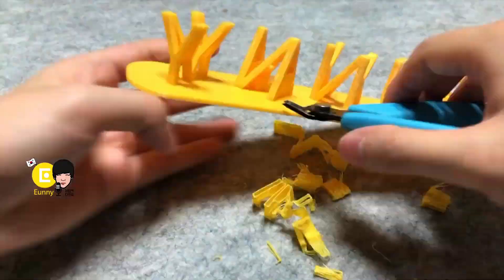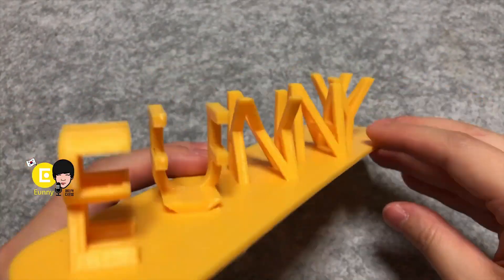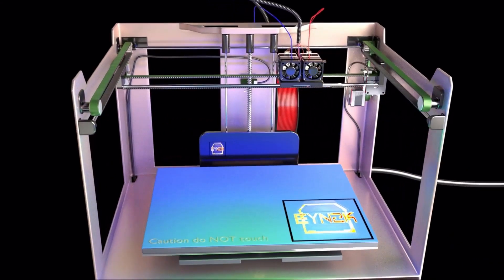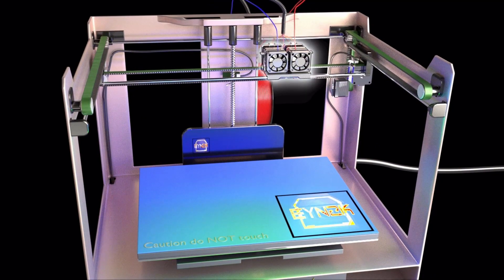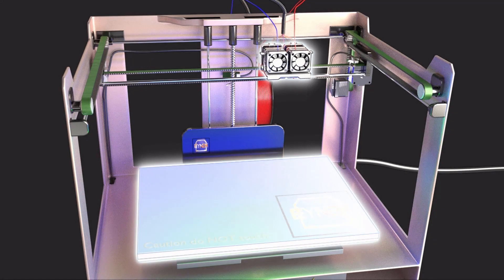The slicer software will also add support columns where needed. These are required because plastic cannot be laid down in thin air, and the columns help the printer bridge the gaps. These columns are then later removed if needed.